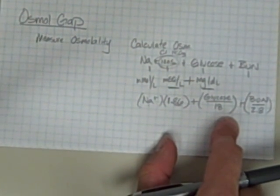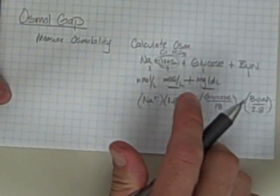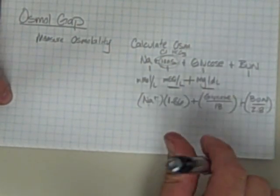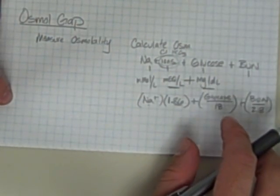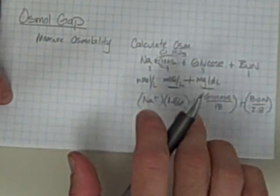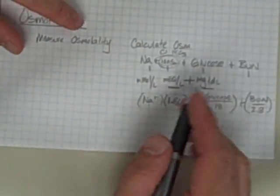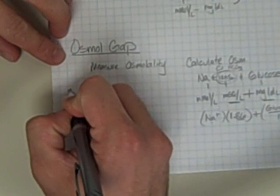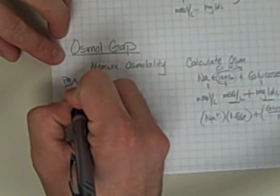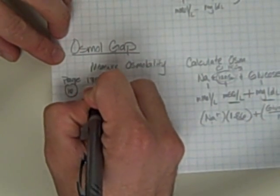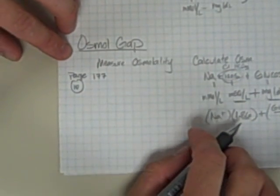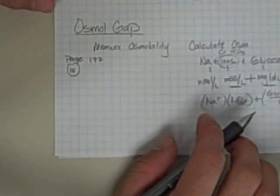So let's do one from the book. So the book says, find the calculated, let's see what's a better one. Yeah, so it's asking you for the, let's do number 16 from page 177 in your book.